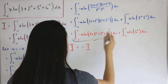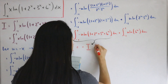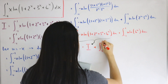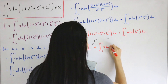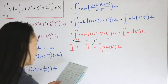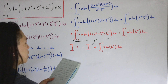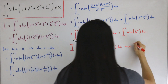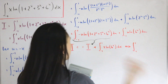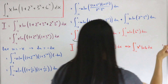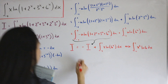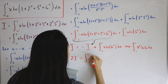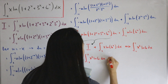So capital I equals -I plus the remaining integral. Using the natural log power rule, ln(6^x) = x · ln(6), that remaining integral becomes the integral from -1 to 1 of x² · ln(6) dx. Adding I to both sides gives 2I = ln(6) times the integral from -1 to 1 of x² dx.